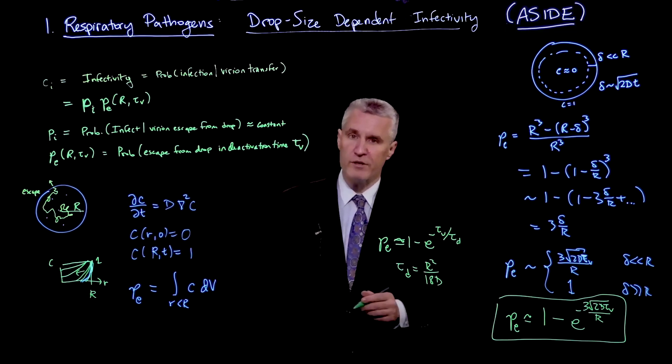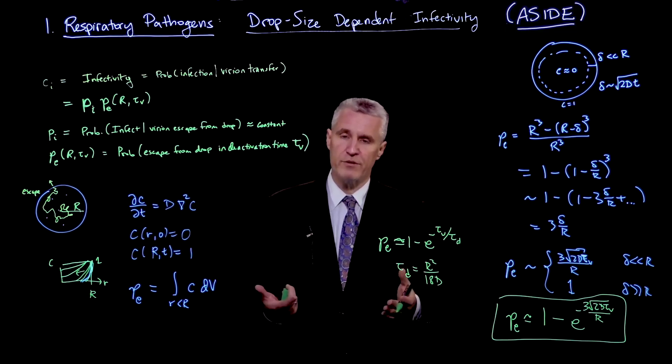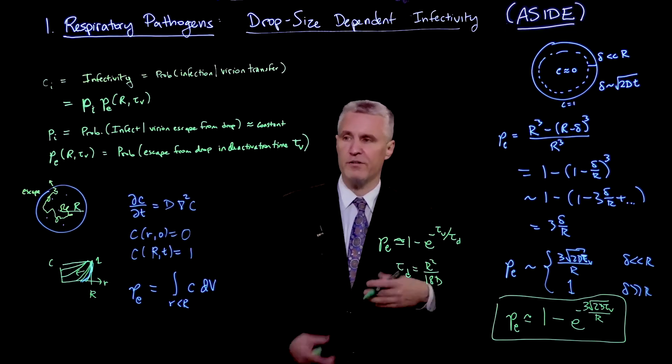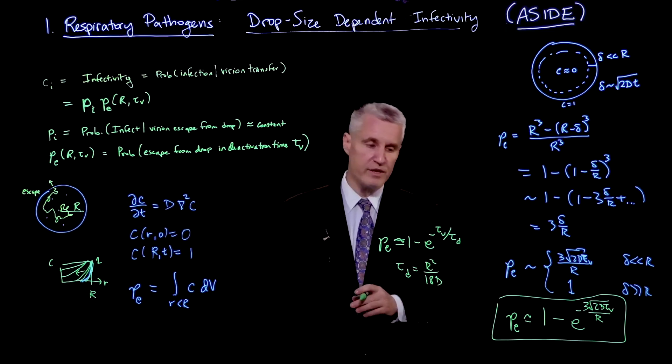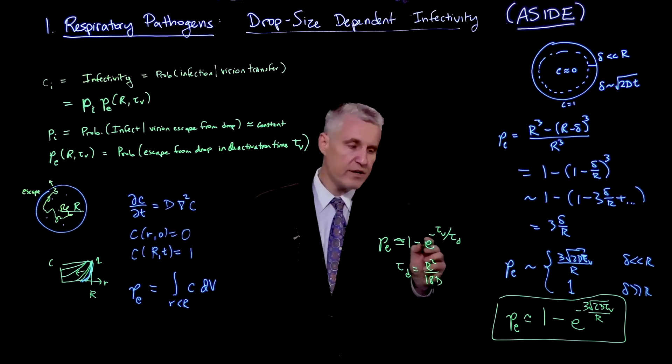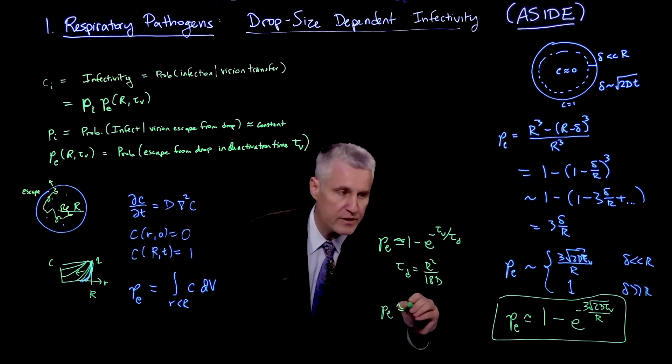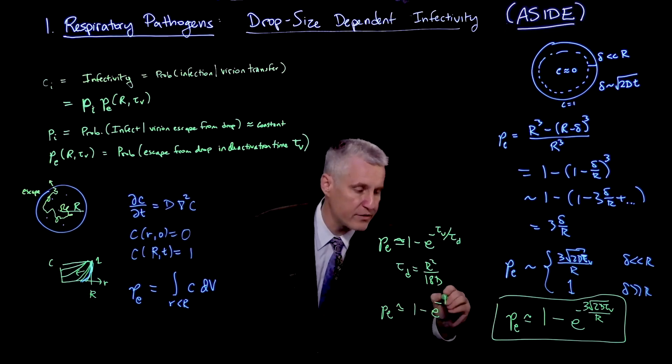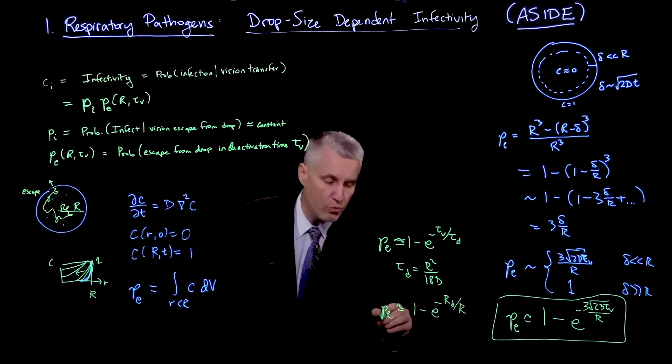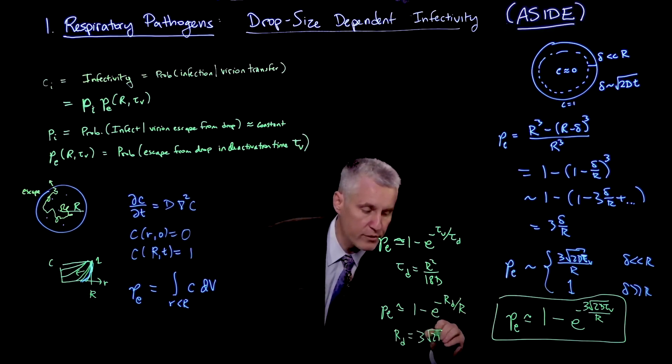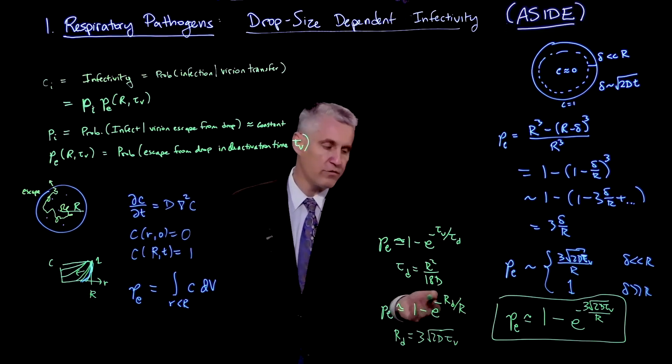You may recall from our last calculation, the average first passage time in the sphere calculated exactly was R²/15D. So this very simple calculation is giving us roughly the right order of magnitude for that time. But we're not interested so much in writing this in terms of time. We'd like to write it in terms of radius. So I can write Pe = 1 - exp(-Rd/R), where Rd is 3√(2Dτv).